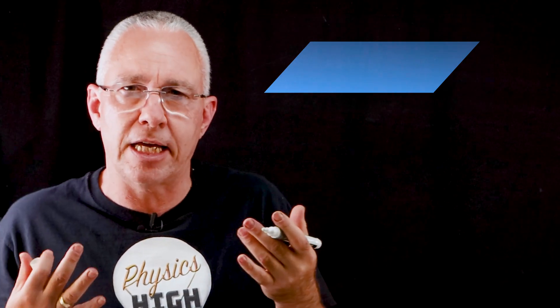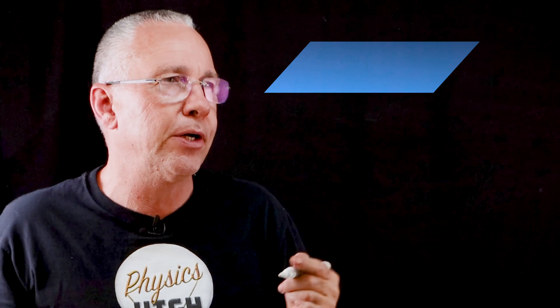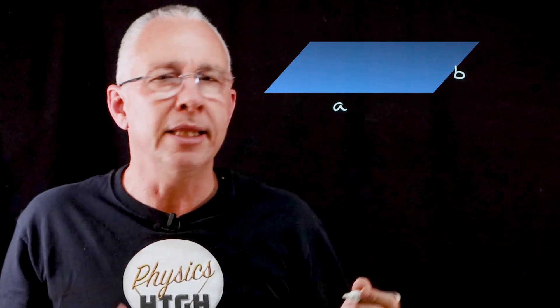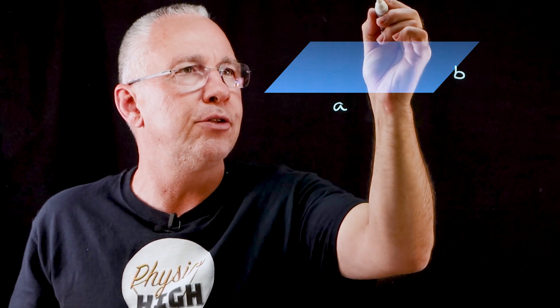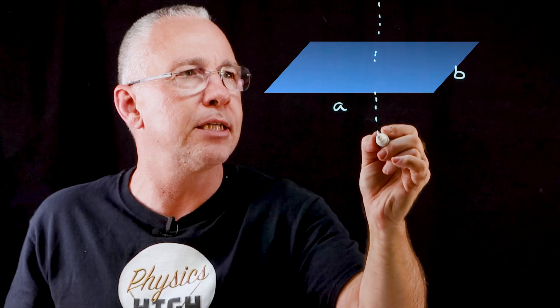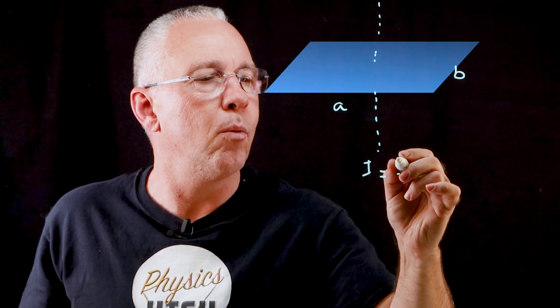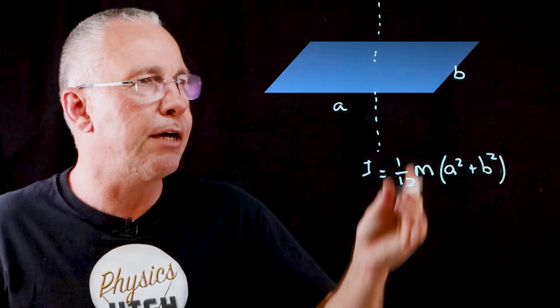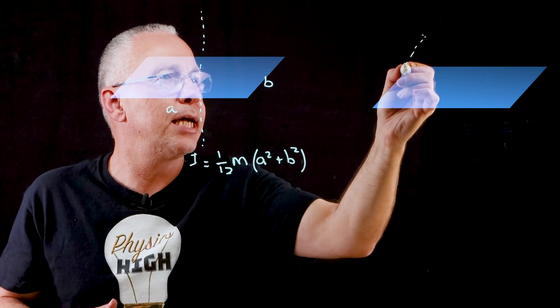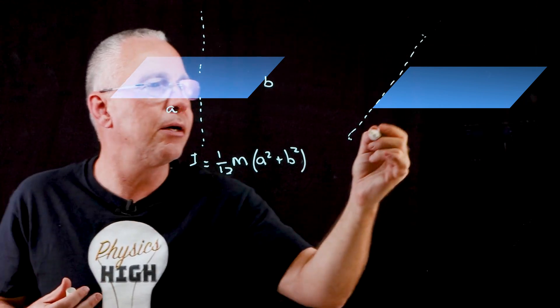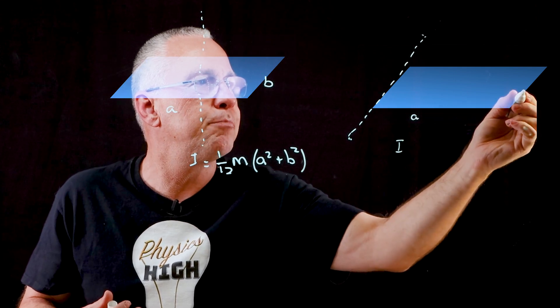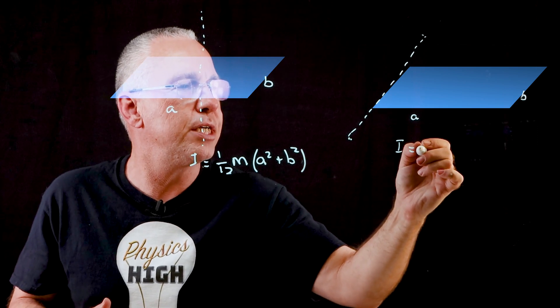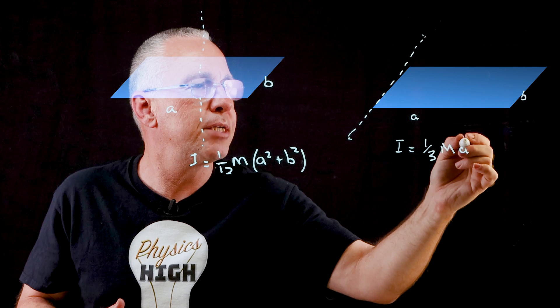What about a rectangular prism? It has a certain length a and a certain width b, while its thickness in the perpendicular direction has no bearing on the calculation. If we rotate it about an axis through its centre, the moment of inertia is one twelfth times the mass times the quantity a squared plus b squared (I = (1/12)m(a² + b²)). If instead we rotate the same mass about one edge, then b is not important and the moment of inertia equals one third times the mass times a squared (I = (1/3)ma²).